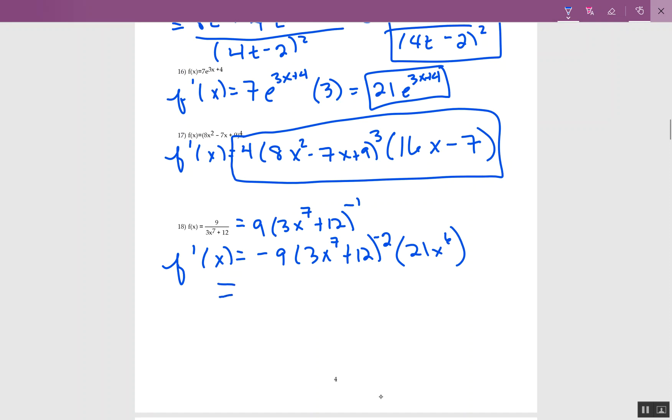You could, if you want to, multiply, like put this 9 together with this 21. So I'm going to do that. This is going to be negative. This will be 189. This is x to the 6th over 3x, or it's times 3x to the 7th plus 12 to the negative 2.